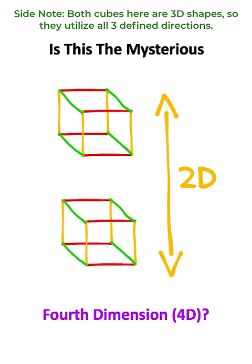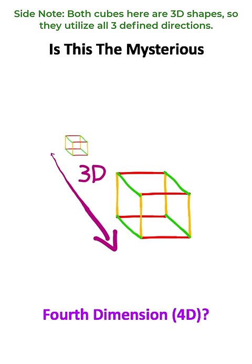If I took the cubes and drew them above and below one another, this vertical axis was defined in the second dimension. Even if I took one of the cubes and shot it into the screen, this direction was defined by the third dimension.